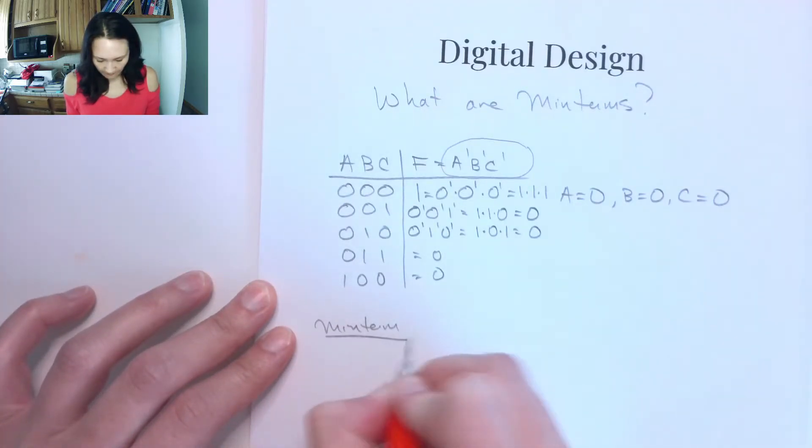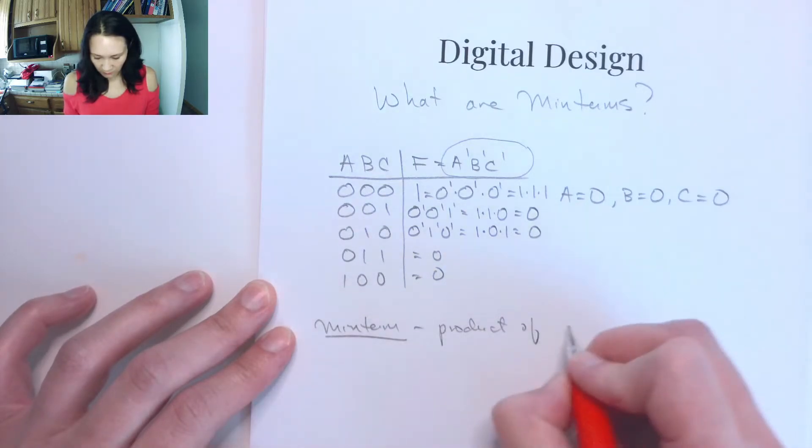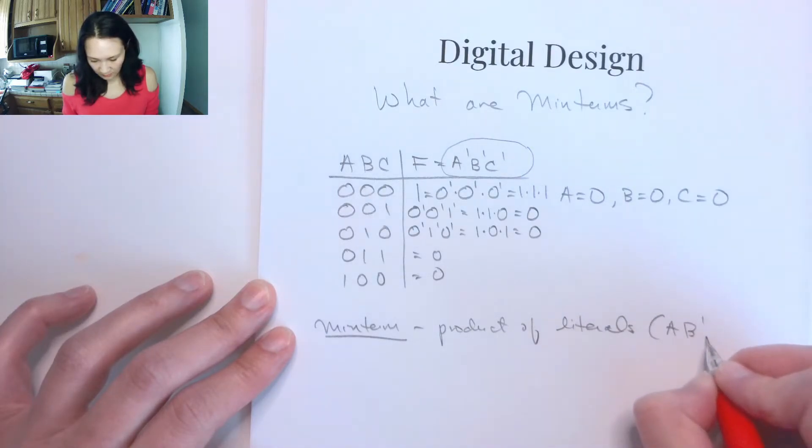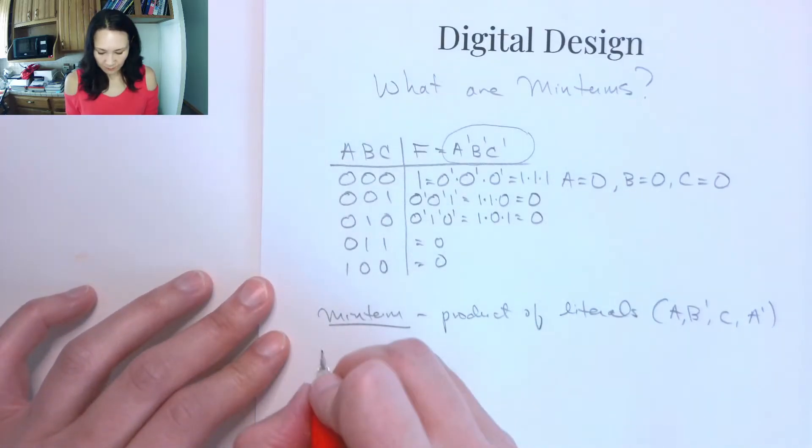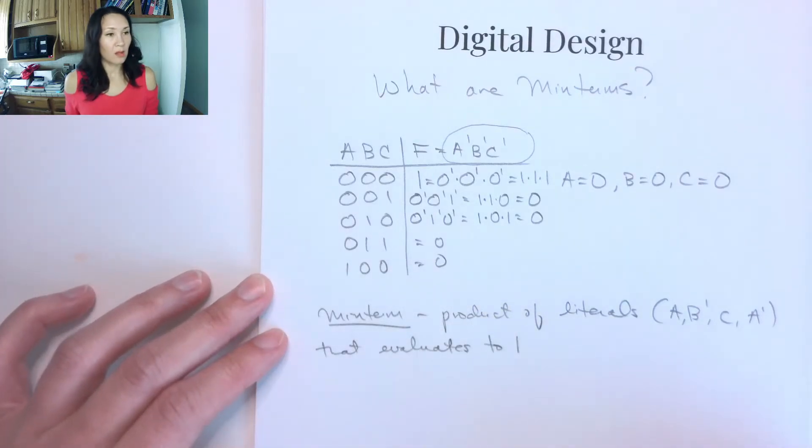The minterm is product of literals, i.e., like A, B naught, C, whatever your inputs are, either complemented or uncomplemented, that evaluates to 1.